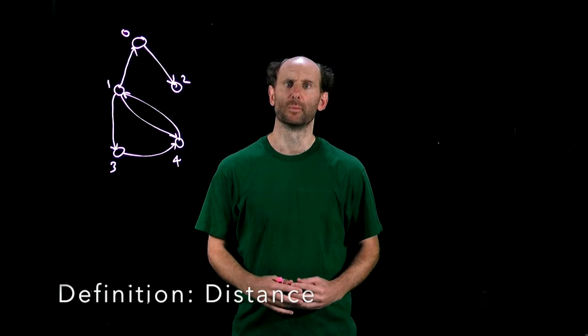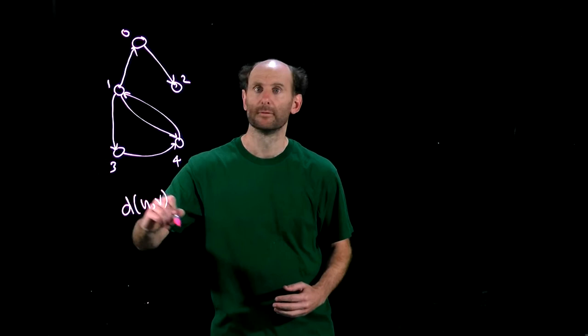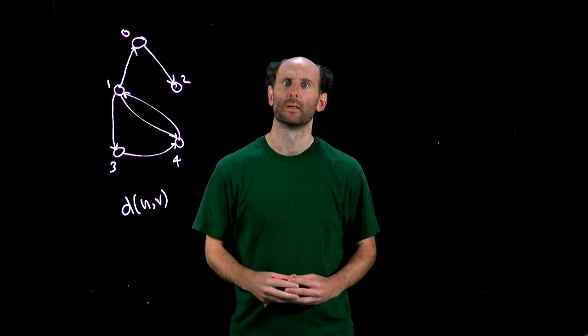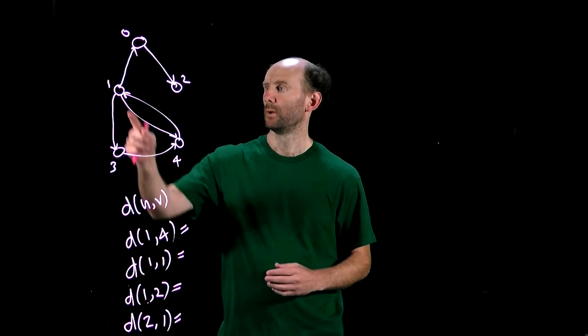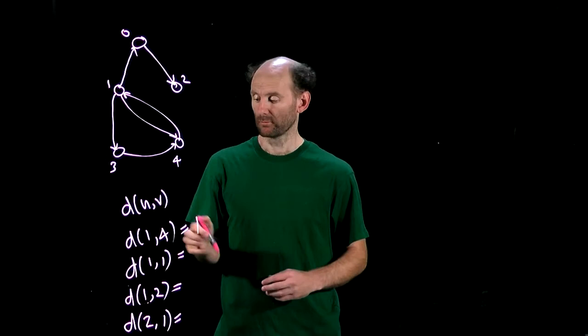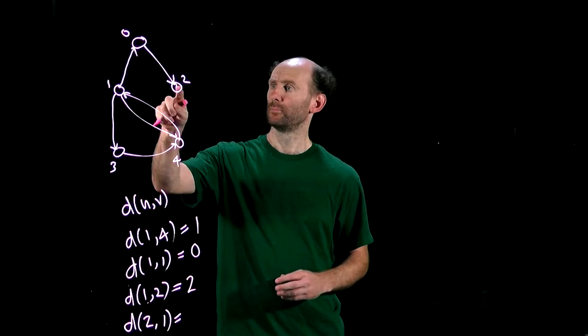The distance between nodes U and V, which we'll write d(U,V), is the length of the shortest path from U to V. And if there is no path from U to V, we'll say the distance from U to V is either undefined or infinite. So in our graph here, the distance from 1 to 4 is just 1. The distance from 1 to itself is 0. The distance from 1 to 2 is a path of length 2, so must be 2. But the distance from 2 back to 1, well we can't go from 2 to 1, so we'll call that infinite.